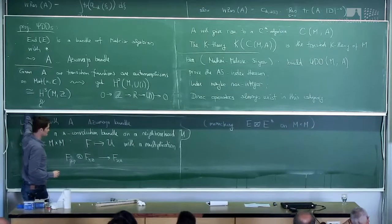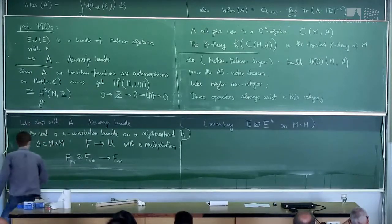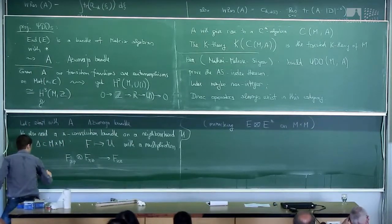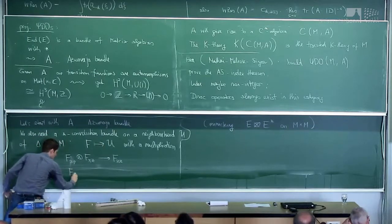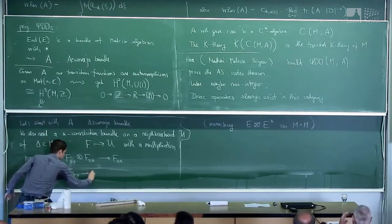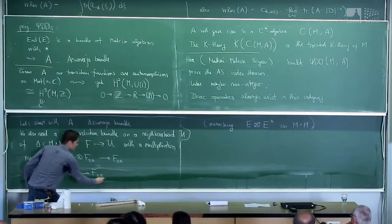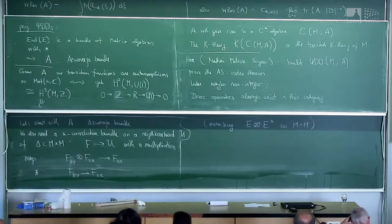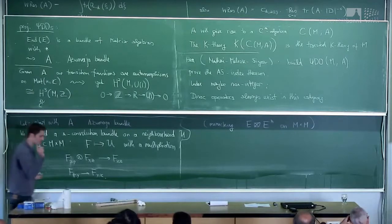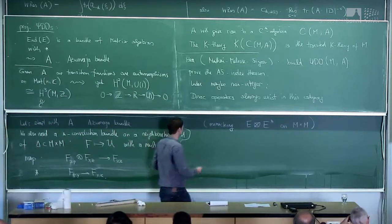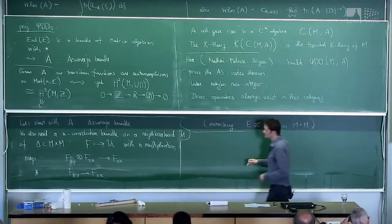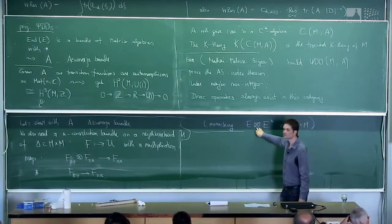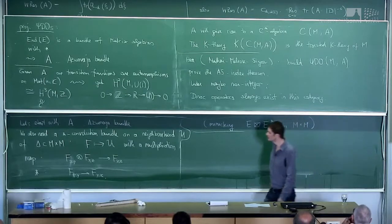There is also a star-map which goes from the fiber at (x,y) to the fiber at (y,x), which should be conjugate-linear and an involution. And then you write down a couple of axioms and compatibilities to mimic that situation. Given such a bundle F, one can define pseudo-differential operators on M with values in A.